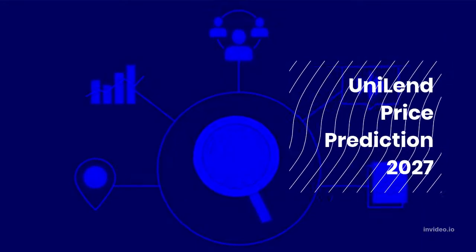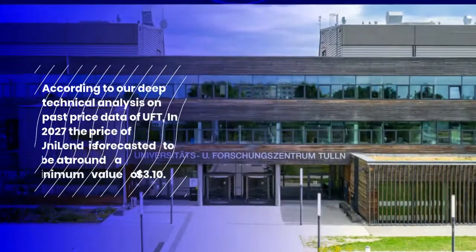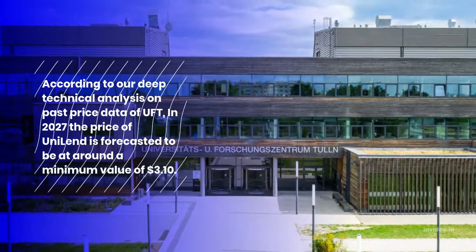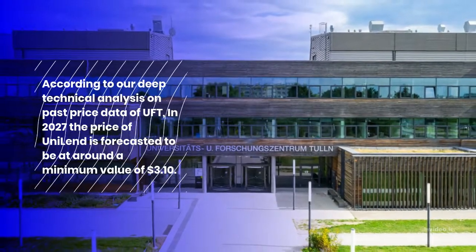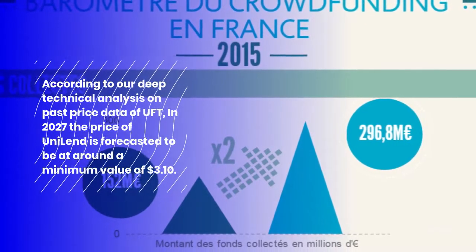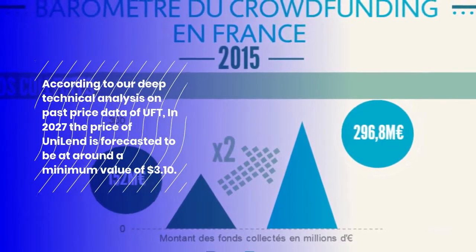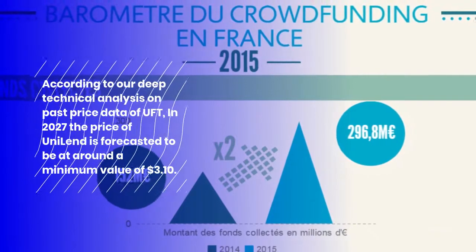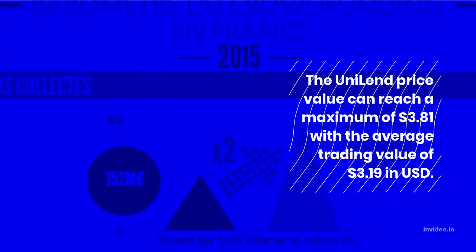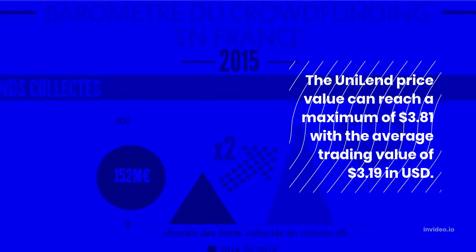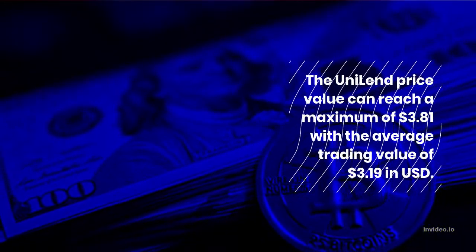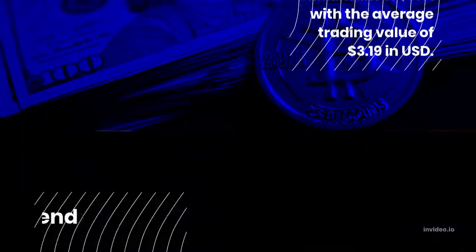Uniland Price Prediction 2027: According to our deep technical analysis on past price data of UFT, in 2027 the price of Uniland is forecasted to be at around a minimum value of $3.10. The Uniland price value can reach a maximum of $3.81 with the average trading value of $3.19.